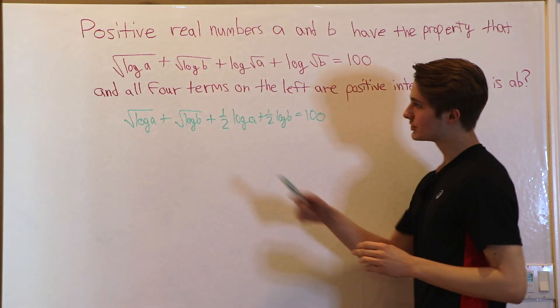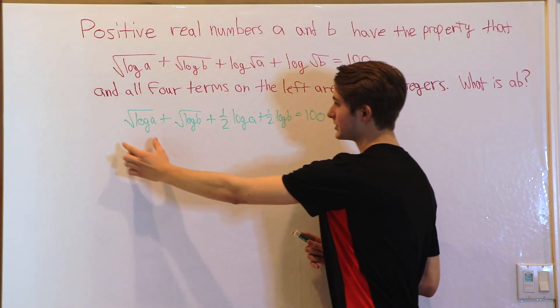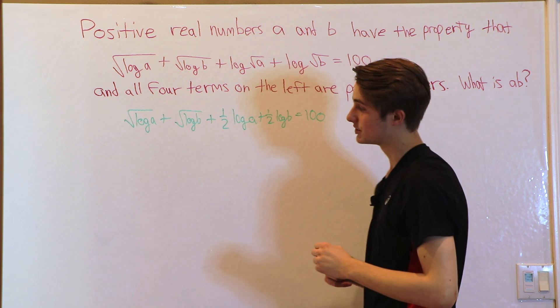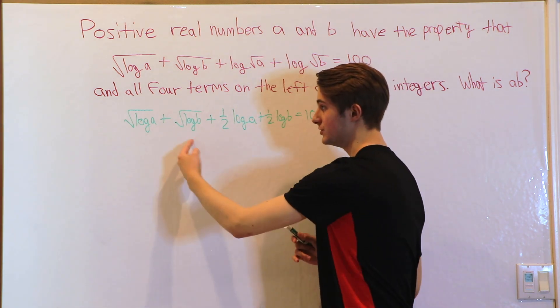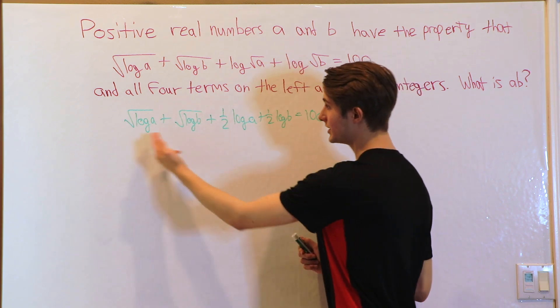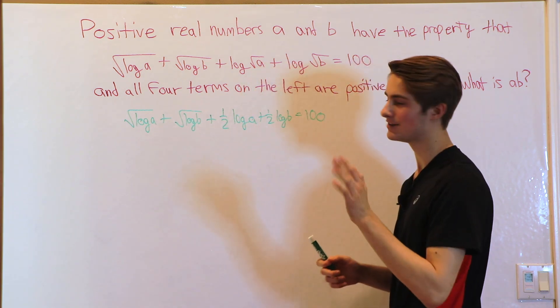But this equation is still kind of confusing. We have this log A square root log A. There's no kind of fancy manipulation we can do to get rid of the square root and the log, especially because we have two of them. If we square it, we're still going to be left with the square root of two of these logs multiplied together, which is not very nice.